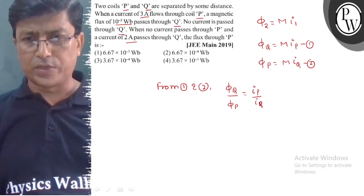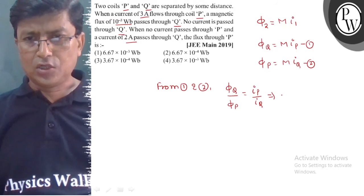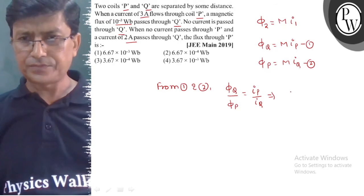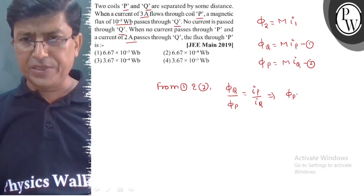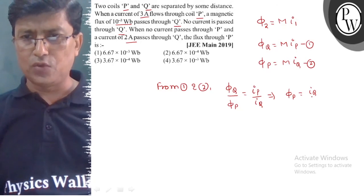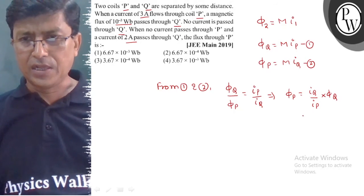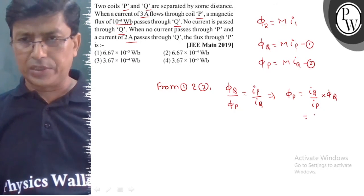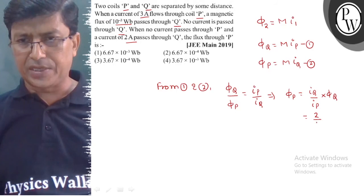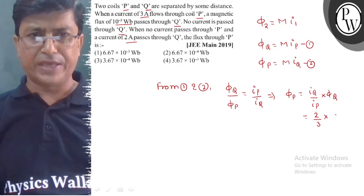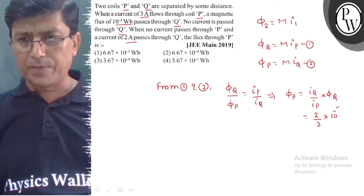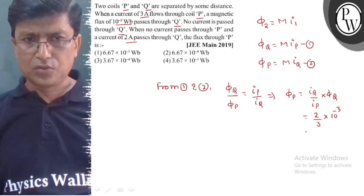Therefore φP equals IQ over IP times φQ. Substituting the values: IQ is 2 ampere, IP is 3 ampere, φQ is 10 to the power minus 3 weber.